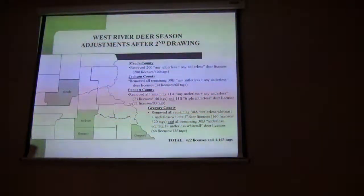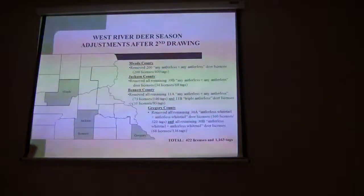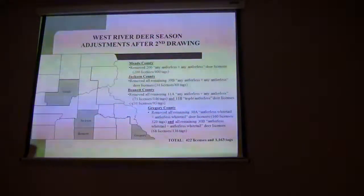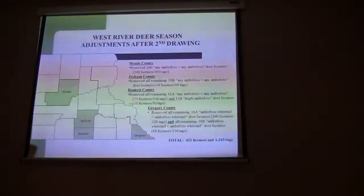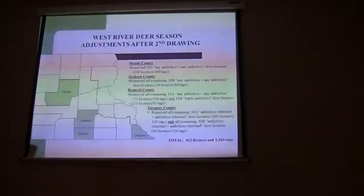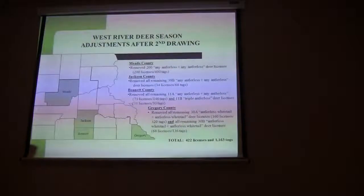Here's what we did for West River deer — just to recap: we pulled the unsold licenses after the second draw for Meade, Jackson, Bennett, and Gregory County. For Meade County, that resulted in about a 40% reduction in antlerless-only type licenses. For Jackson County, we removed about 23% of the antlerless-only licenses. Bennett County, that was 52%, and Gregory County, 33%. All said, we removed about 422 licenses or over 1,100 tags.